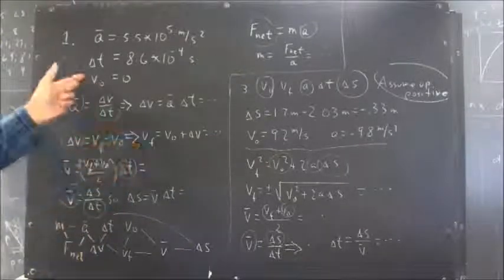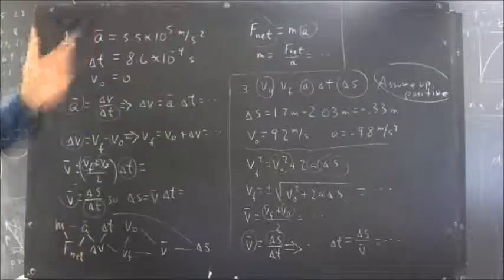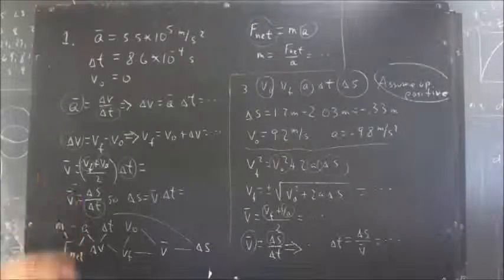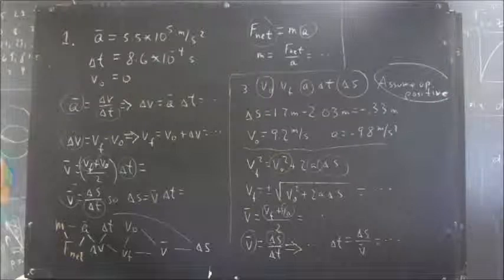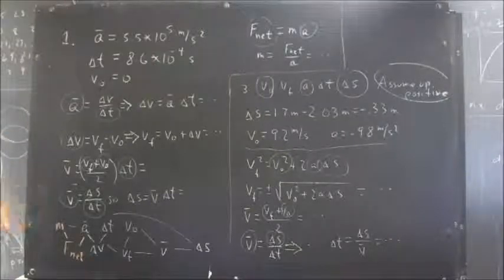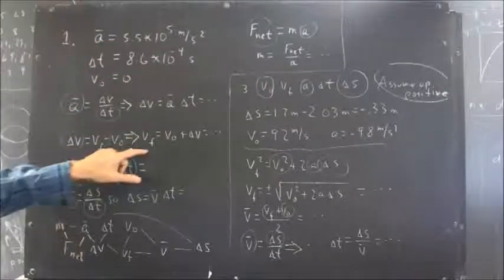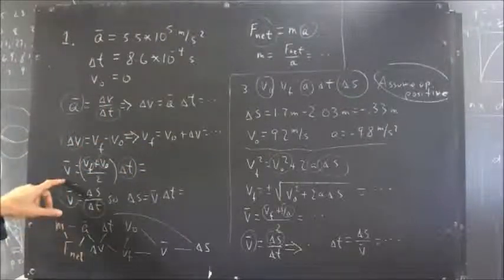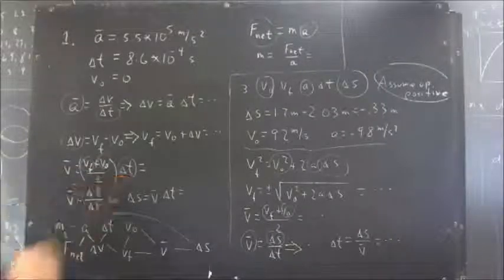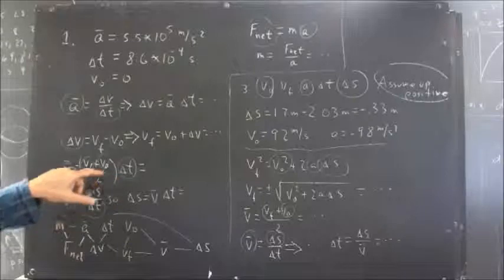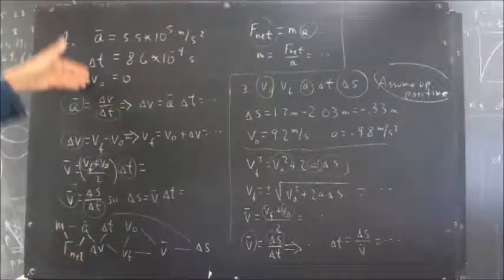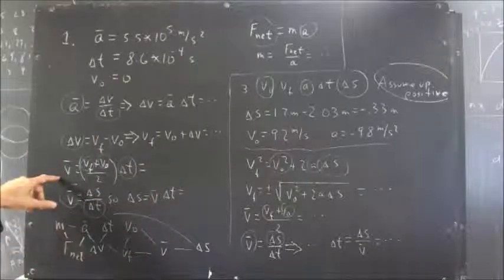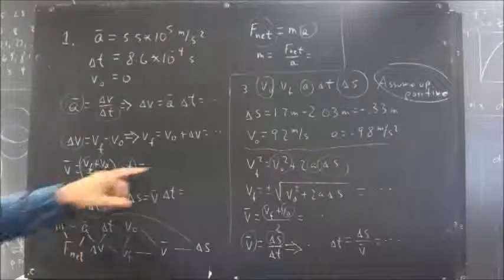Then what can we do? Well, now we know initial velocity, final velocity, delta T, A, delta V. The only thing we don't know is delta S, our displacement. Well, actually, there are two things we don't know. We don't know the average velocity. We don't know the displacement. So what can we get from what we know? We know that we can average VF and V naught to get our average velocity. And so average velocity is VF plus V naught over 2 multiplied by delta T, and those are things we were either given or we found.